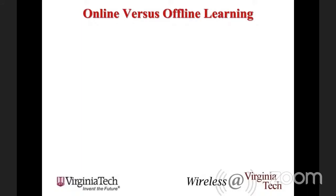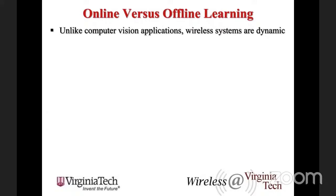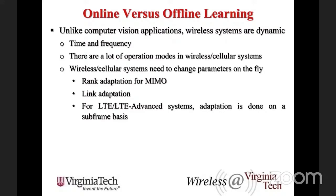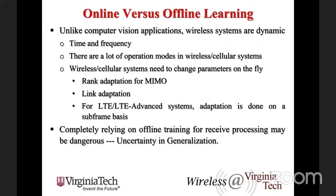However, this machine learning approach requires a large amount of training data. And in wireless, unlike computer vision, the system is highly dynamic — changing on a millisecond basis with rank adaptation, link adaptation, precoding, and scheduling all done per subframe. Completely relying on offline training for receive processing is risky due to the uncertainty in generalization: you cannot guarantee that offline training data captures all the features seen online. This motivates online learning-based receive processing for robust and adaptive transmission.